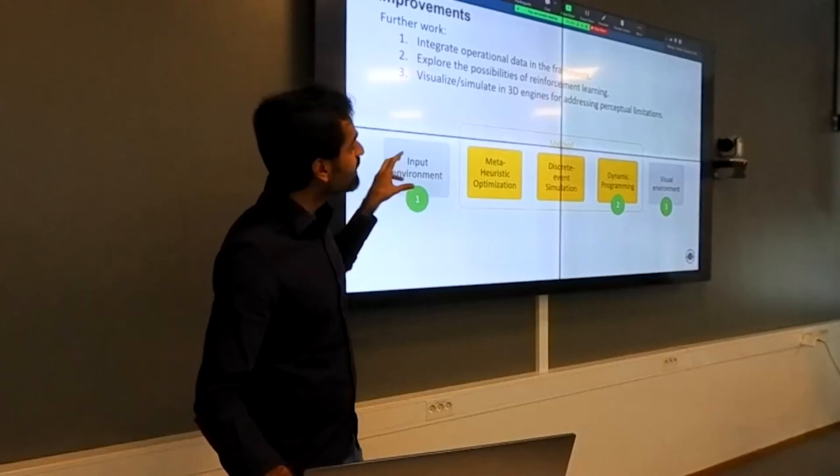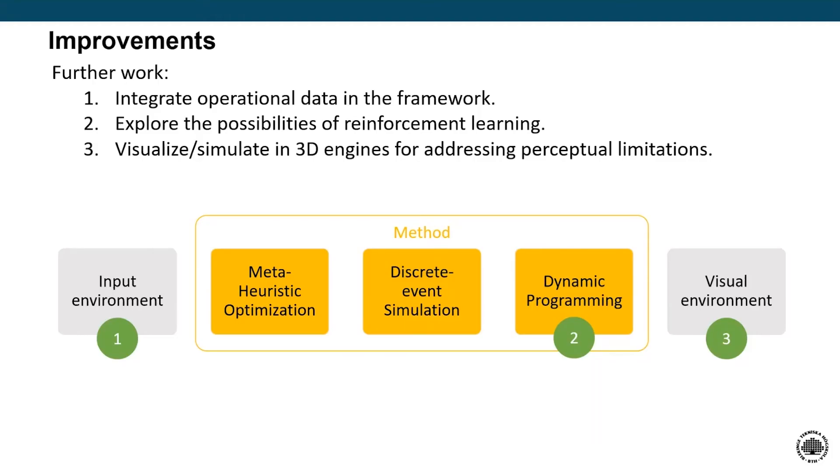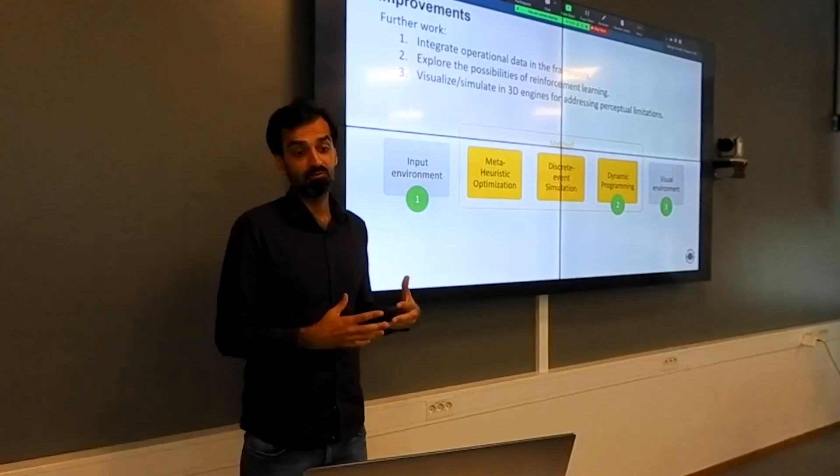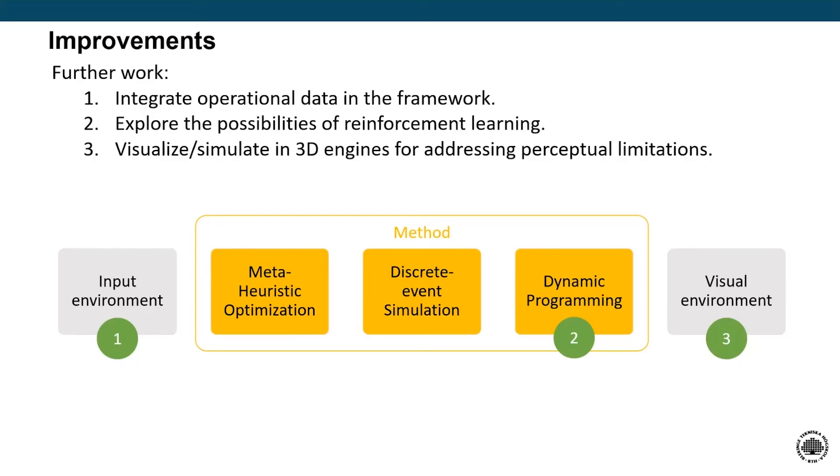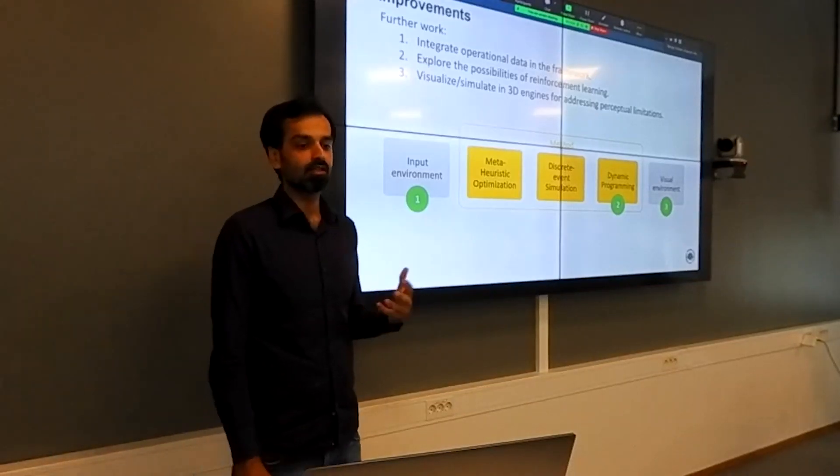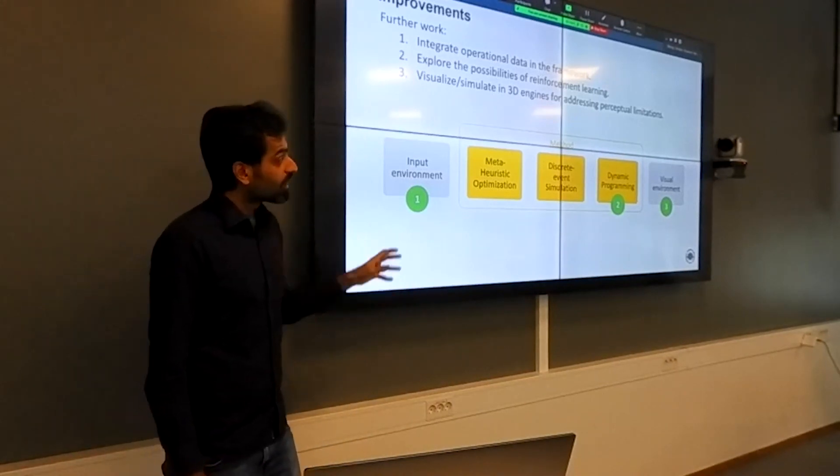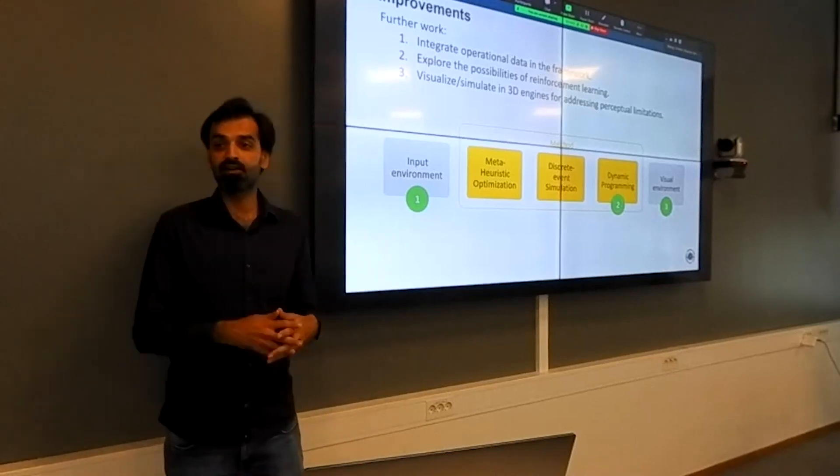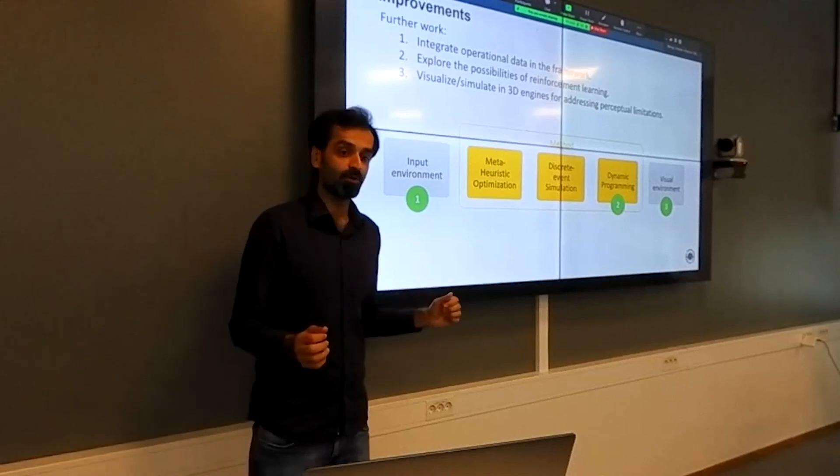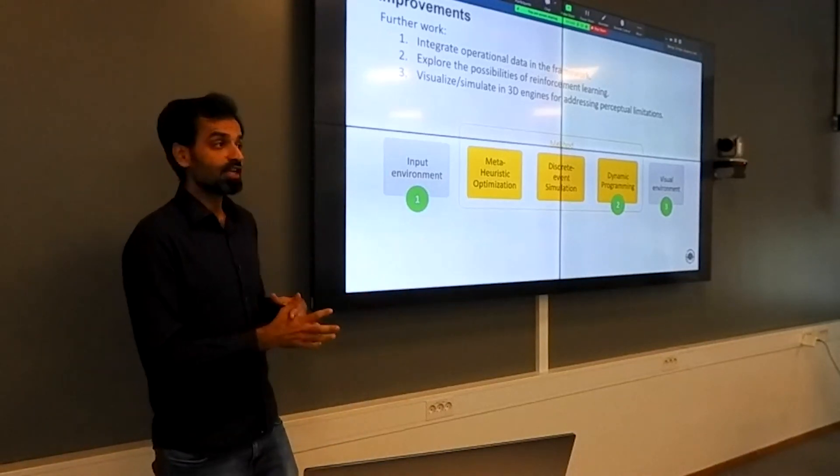And you can see that in this framework where these improvement opportunities are. First is to integrate operational data in the framework. Can we simplify physics-based models by surrogate models and see if we have results that are better than what we can achieve right now? Second is, can we replace dynamic programming or such brute force computational techniques with some advanced techniques that we have today, like reinforcement learning for example? And the third is a visual environment—can we now visualize or simulate these things in a 3D environment, like for example Marco showed some work of Julia and others in our department that are trying to address perceptual limitations of our brains?